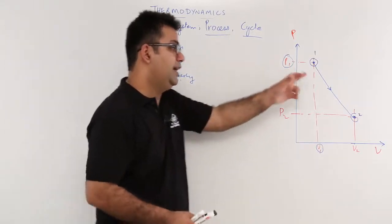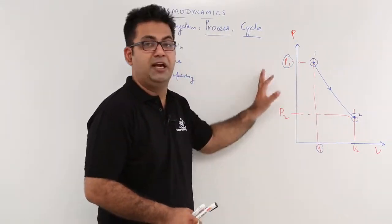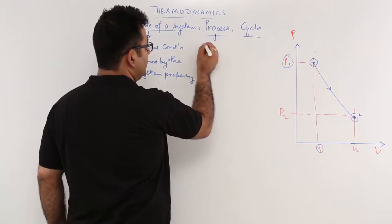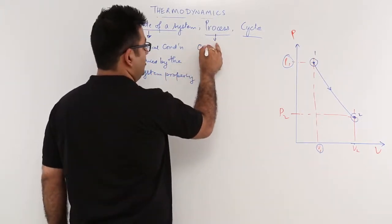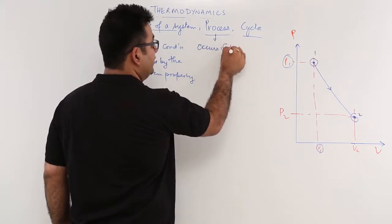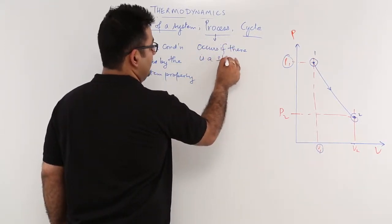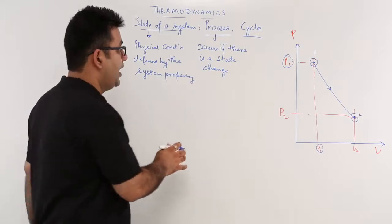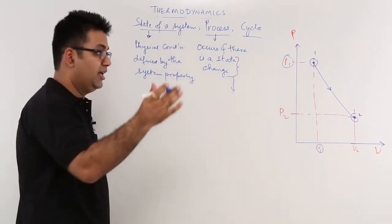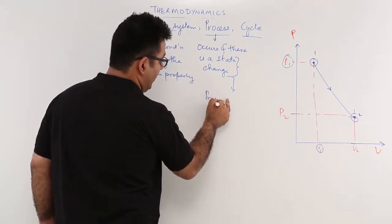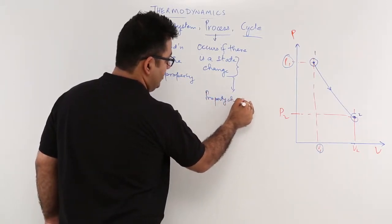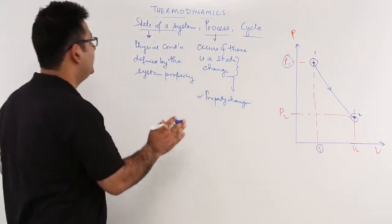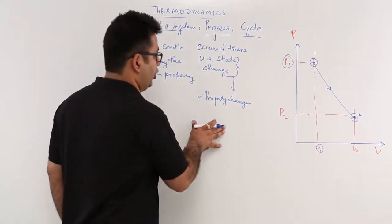In changing the state from 1 to 2, the pressure value changes from P1 to P2, and the volume changes from V1 to V2. So in a process, the state changes and there is also a change in the state variables. To define what a process is: a process occurs if there is a state change, and in a state change, there are property changes as well. We have now understood what is the state of a system and what is the process — that is, a state change.